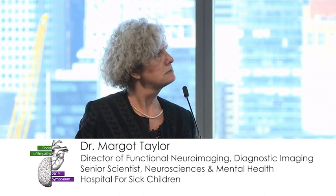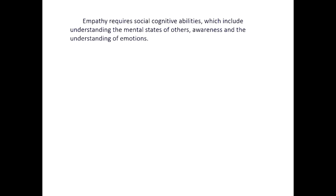I'm going to talk about social cognitive functions in childhood. Empathy — the roots of empathy — are in many ways social cognitive abilities. They include the understanding of the mental states of others and the awareness and understanding of emotions. Social cognition plays a very critical role in early brain development. It's crucial for fostering social competence, but it is also very important for shaping learning. Children learn much better in a social situation than they would with a video, for example.